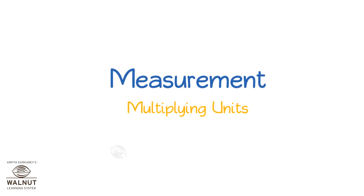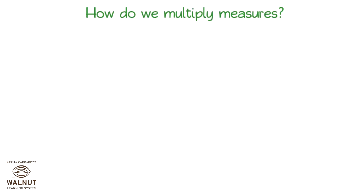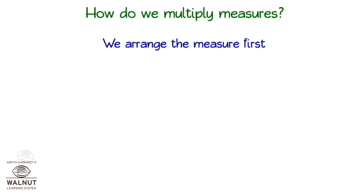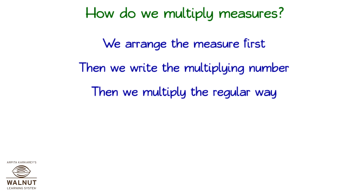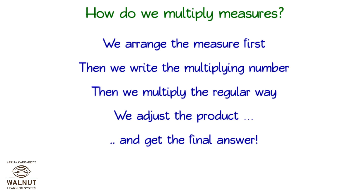Measurement: Multiplying Units. How do we multiply measures? We arrange the measures first, then we write the multiplying number, then we multiply the regular way, and we adjust the product to get the final answer. Does that sound too complicated? Here, let's just solve a few and you'll know what I'm talking about. It's easier to just do it.